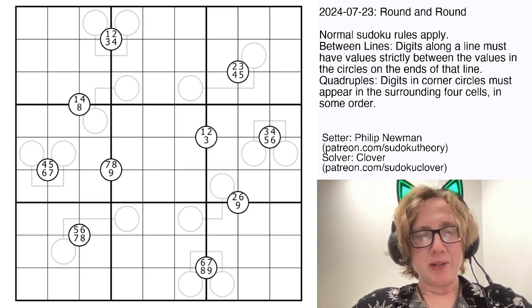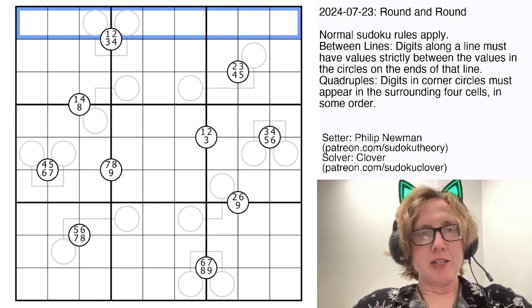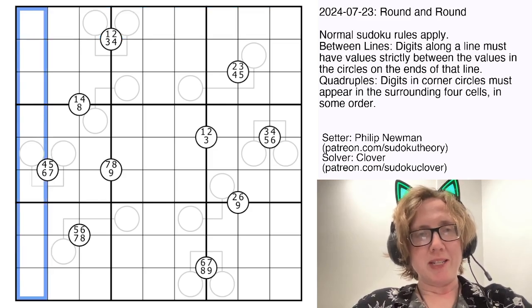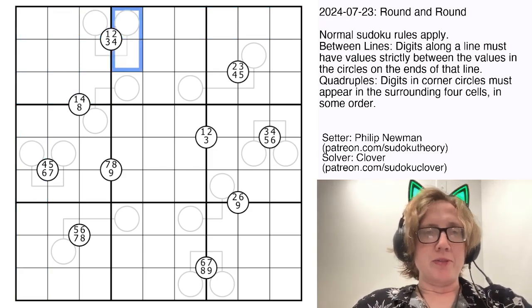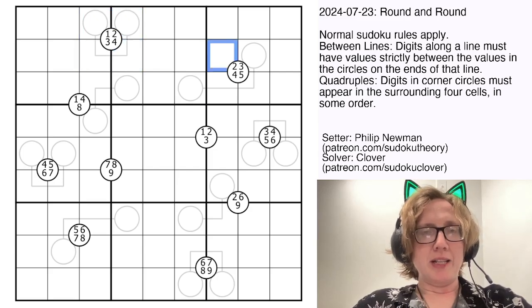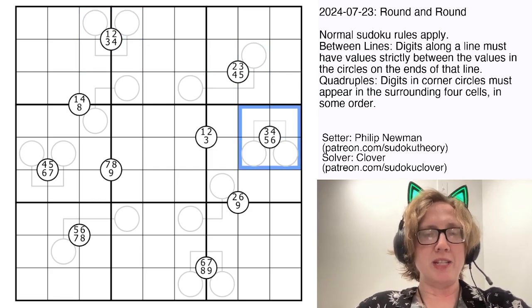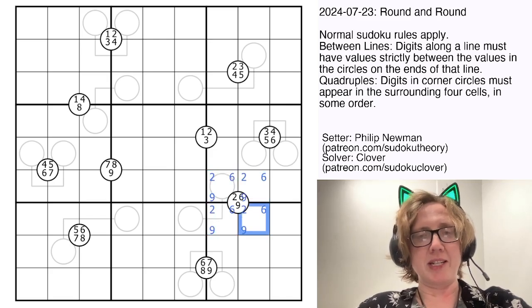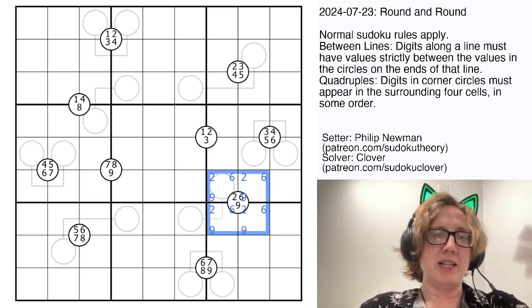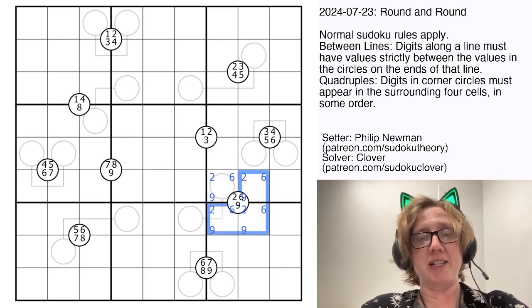So it is a between-lines quadruple sudoku. We're placing the digits 1 through 9 once each in each row, each column, and each outlined 3x3 region. We also have some quadruples clues in the grid - those are these circles, and those tell us that the digits marked in the circle have to appear at least once in the four cells immediately surrounding that circle. So here we have to have a 2, a 6, and a 9, and then we could also have a second 2, 6, or 9, or we could have some other digit, like we could have 2, 3, 6, and 9 if we wanted to.